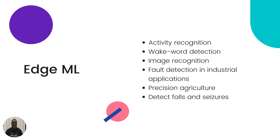Another example is image recognition: how do you get an edge device to respond when its camera recognizes a particular object, animal, or person? For instance, how do you automatically turn on cooling in a building when the edge device's camera detects humans present?